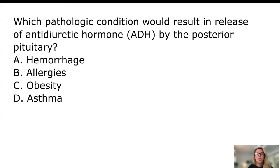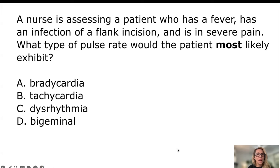Next question: which pathological condition would result in the release of antidiuretic hormone (ADH) by the posterior pituitary? Choices are hemorrhage, allergies, obesity, and asthma. If we understand that ADH regulates fluid retention, and that it is released when the body is becoming fluid-volume-deficient to prevent further diuresis and hold on to fluid, then hemorrhage is clearly the answer.